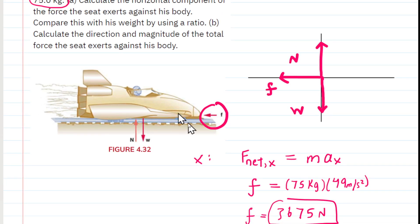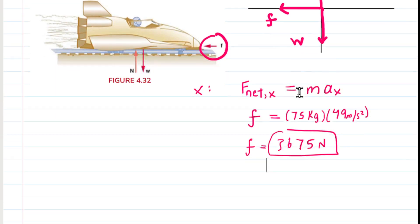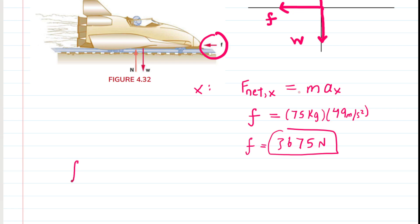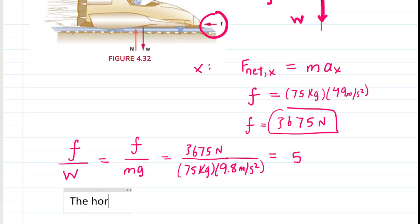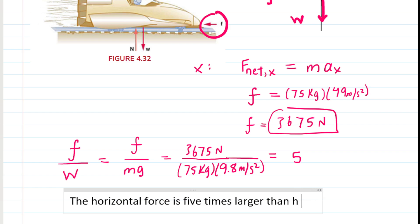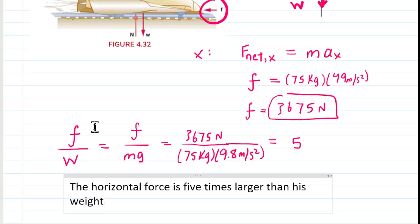We must also compare this force with his weight by using a ratio. We take the horizontal force exerted by the chair and divide it by the weight of the driver. The weight equals mass times the gravitational constant — mg — so using 9.8 meters per second squared for g, the ratio works out to 5. This means the horizontal force is 5 times larger than his weight, which concludes part A.